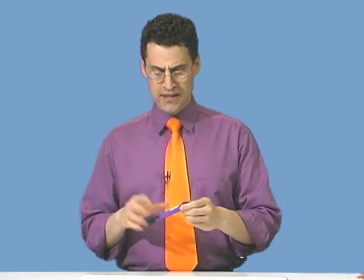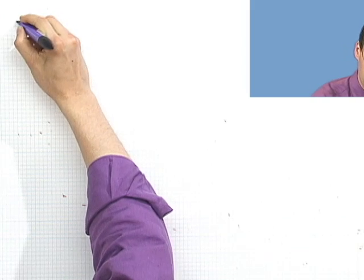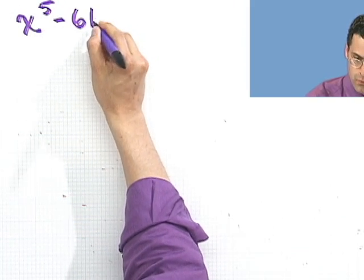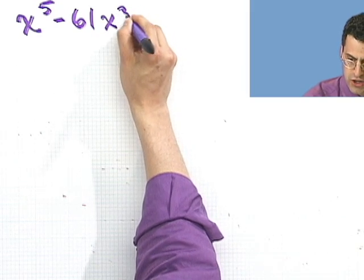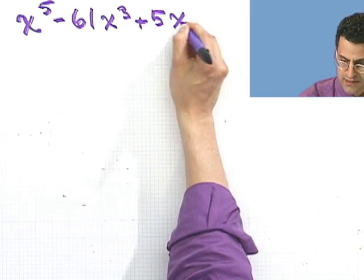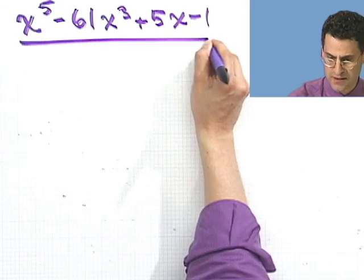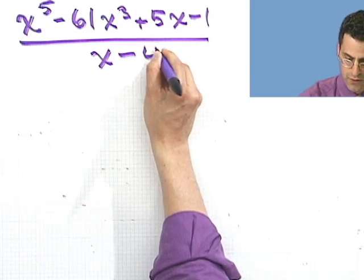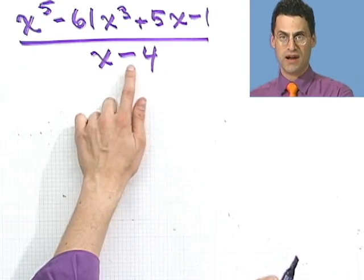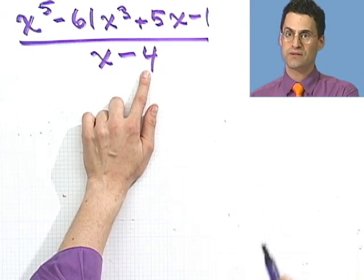Let's see the synthetic division idea really in practice. Not hard to do once you remember the method. So let's consider the following: x to the fifth minus 61x cubed plus 5x minus 1. I want us to divide that by x minus 4. Since I'm dividing only by something of the form x plus a number or x minus a number, I can use synthetic division.